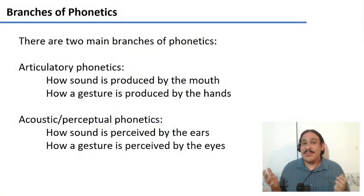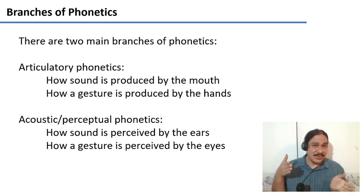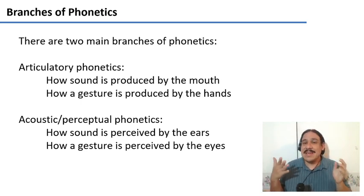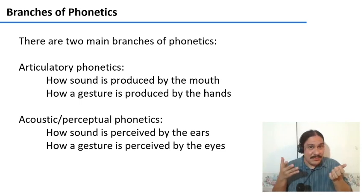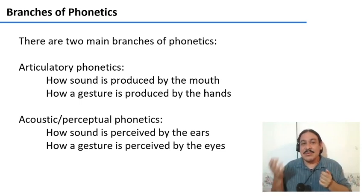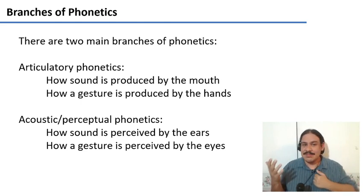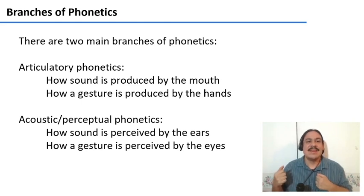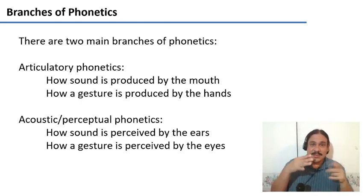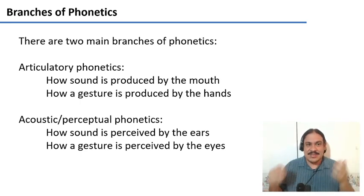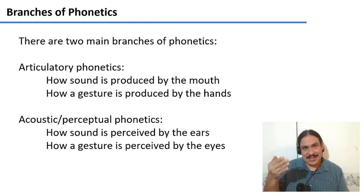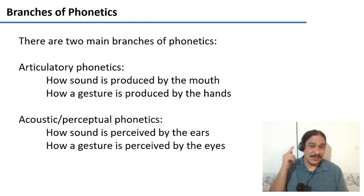There are two main branches of phonetics. There's articulatory phonetics, which is the study of how sound is produced by your mouth, and also the study of how gestures are produced by your hands when using sign languages — your hands and parts of your face, as we saw last week. And then there's acoustic or perceptual phonetics, which studies how those sounds are received by your ear or by your eyes, for example.